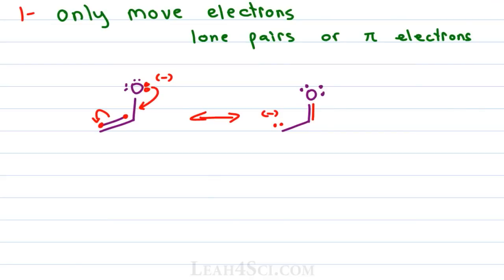The charge moved, but not because we had an arrow starting at the negative and pushing it elsewhere — rather, when the electrons shift, the atoms get new formal charges. Oxygen has a new formal charge of zero, carbon has a new formal charge of negative one, and that's how the charges moved.